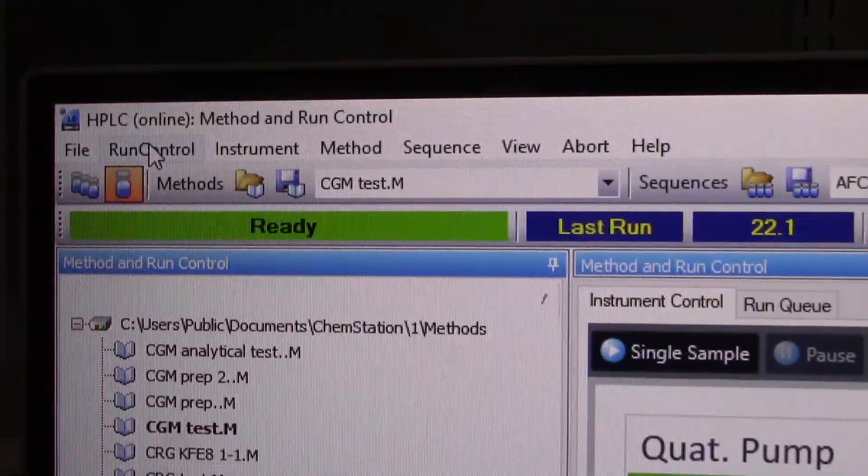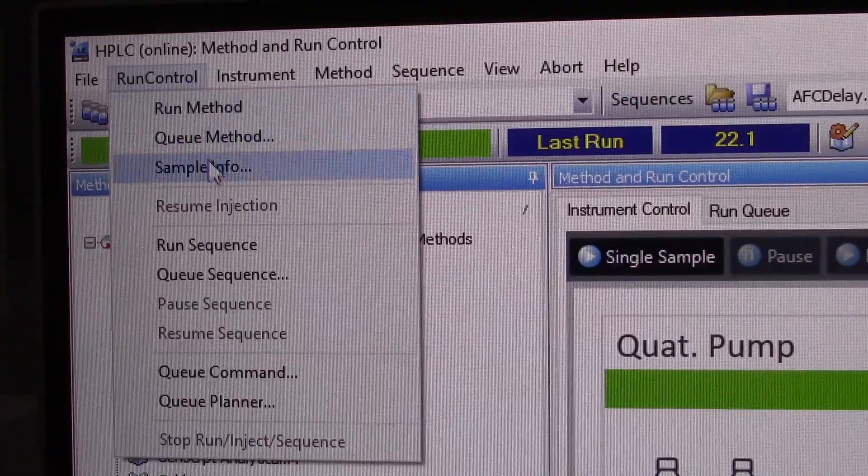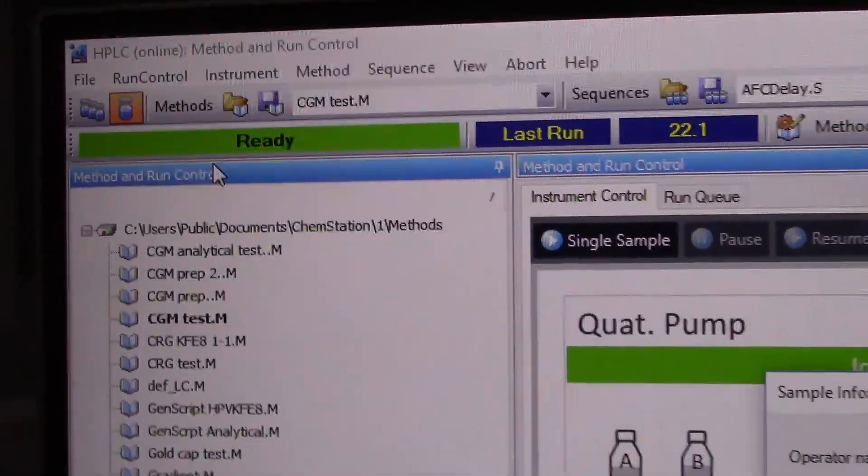In order to make sure your data is named and saved correctly, go up to sample info and type in the name of your sample and you may want to include some things like your initials and the date.